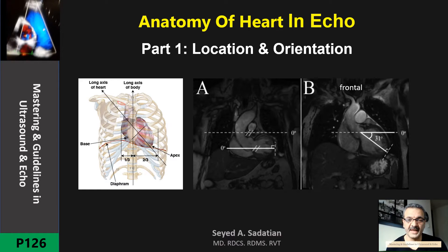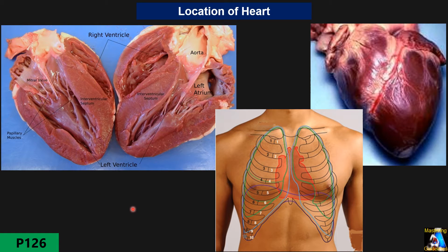Welcome to Mastering and Guide Learning in Ultrasound and ECHO. The heart is a muscular cone-shaped organ that circulates blood inside of our body and is located inside of the chest in the area between two lungs that we call mediastinum.